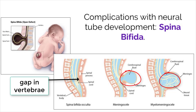Leaving part of your spinal cord unprotected can be very dangerous, as these nerve cells are the main connection between the brain and the peripheral nervous system. If the case of spina bifida is very severe, surgery must be done to fix it.